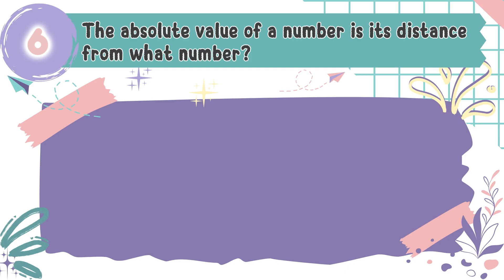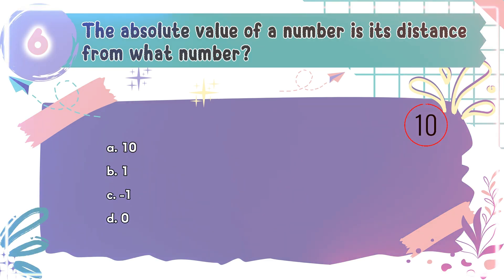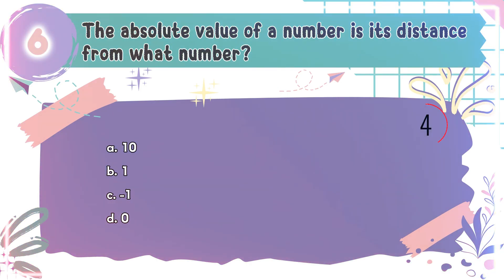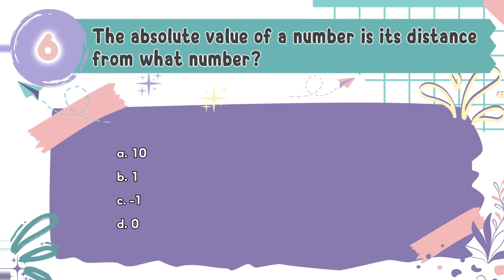Question number 6: The absolute value of a number is its distance from what number? The choices are A. 10, B. 1, C. Negative 1, D. Zero. The correct answer is D. Zero. Absolute value always measures the distance from 0 on the number line.